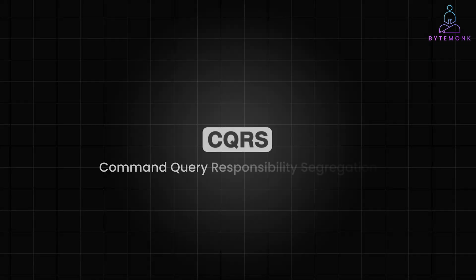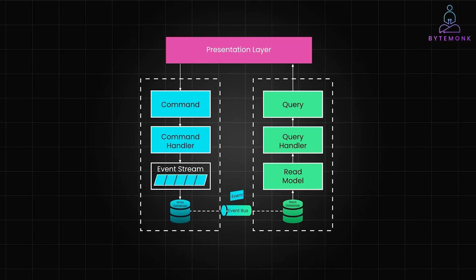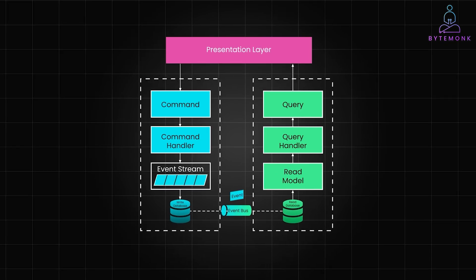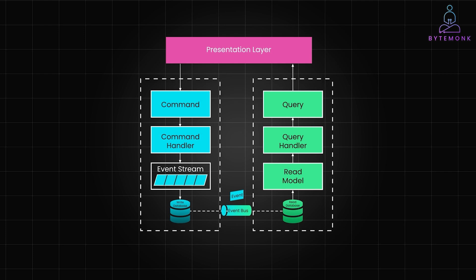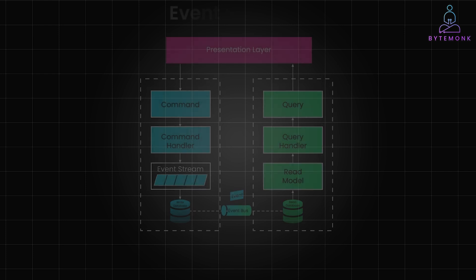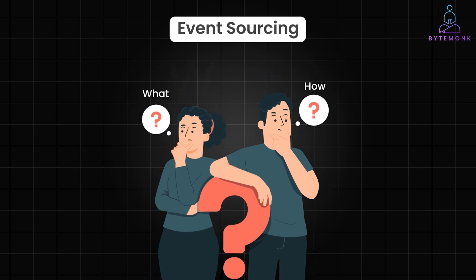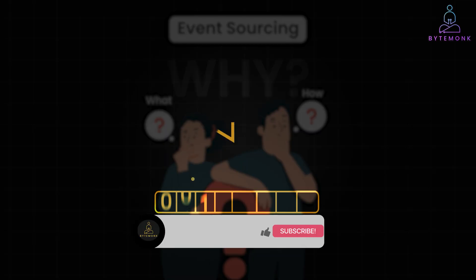In my previous video, I explained the CQRS pattern, multiple ways CQRS can be implemented, and the concept of event sourcing, which can be a valuable companion to CQRS helping to solve some of the challenges we face with asynchronous messaging. Today, we are going to dive deeper into event sourcing — what it is, how it works, and why it's a game changer for managing complex business logic and data in distributed systems.